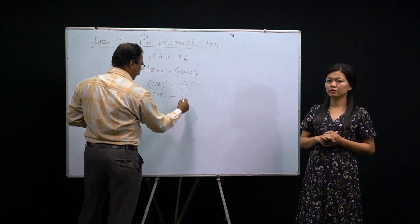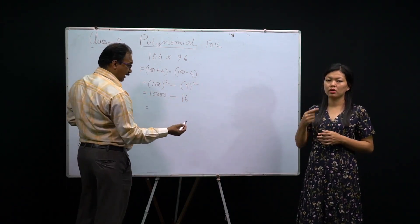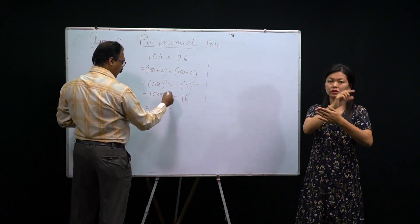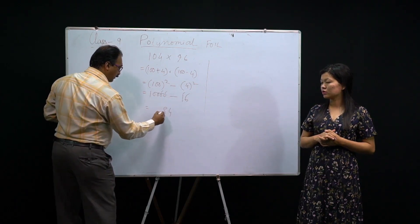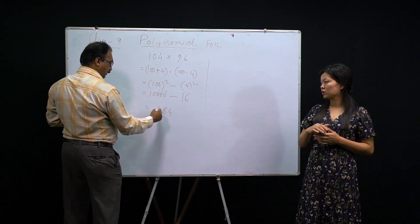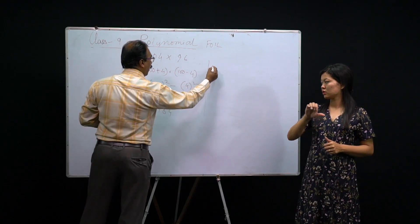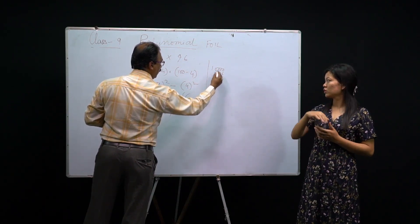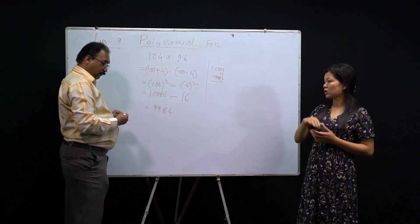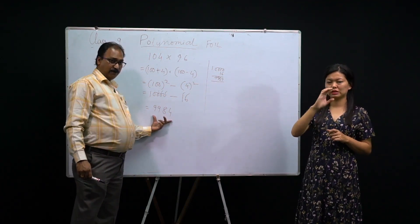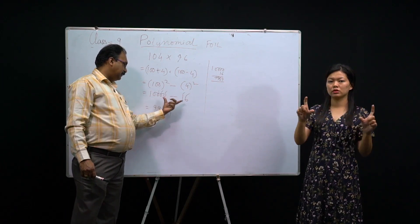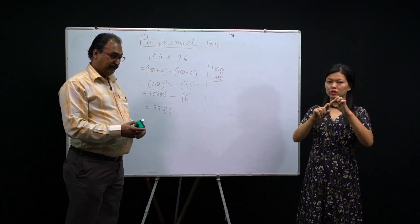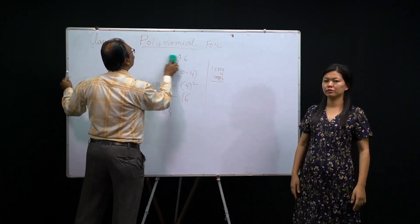100² = 10,000. 4² = 16. Now subtract: 10,000 − 16. You can do it partially: 10,000 minus 16 — working through the digits gives 9,984. So 104 × 96 = 9,984. This is the way you can solve it. Now I'll show some questions — factorize using identity.